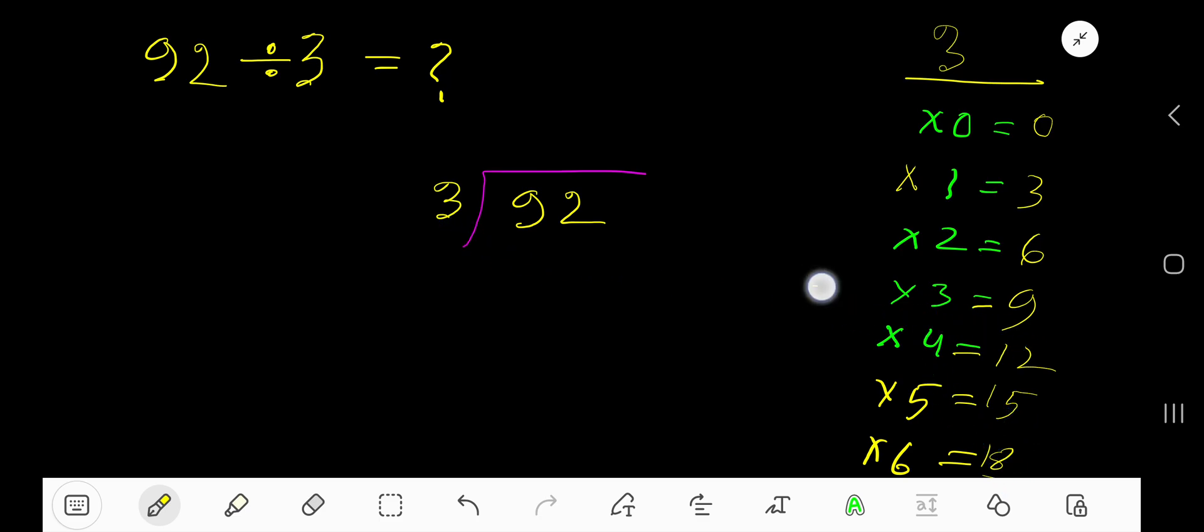3 goes into 9 how many times? 3 goes into 9 3 times. 3 times 3, 9. Subtract, 0. Bring down these 2. So 0, 2 means 2. So our answer is 3, remainder 2.